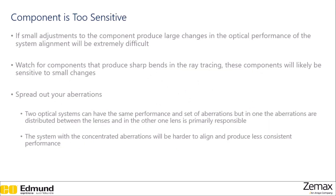And just in general, watch out for components that are sensitive. If a small adjustment to a component produces a large change in the optical performance of the system, alignment will become extremely difficult. Keys to watch for are components that produce sharp bends in the ray tracing, as these will likely be sensitive to small changes. Spread out your aberrations — if a system has aberrations concentrated in one optical component, that system will be much more sensitive than a system with the same amount of aberration spread out over all the components.